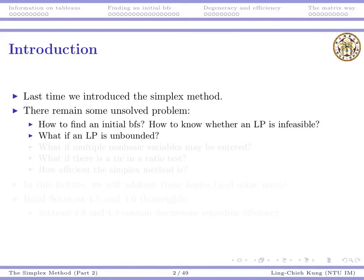The first and probably the most important issue is how to find an initial basic feasible solution. Last time, all the problems we solved contained only less-than-or-equal-to constraints, because we knew how to find a trivial basic feasible solution to start the simplex method. We need to do that for a general linear program so that we may really use the simplex method to solve any problem.